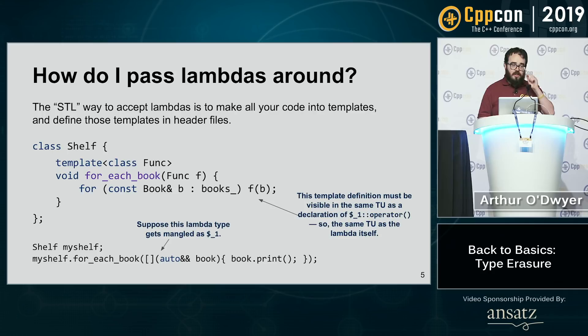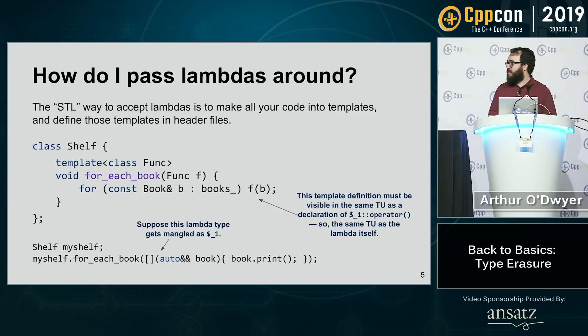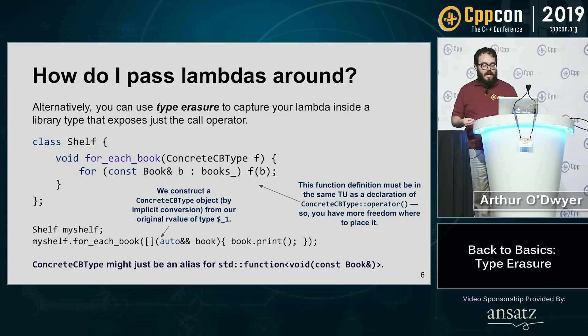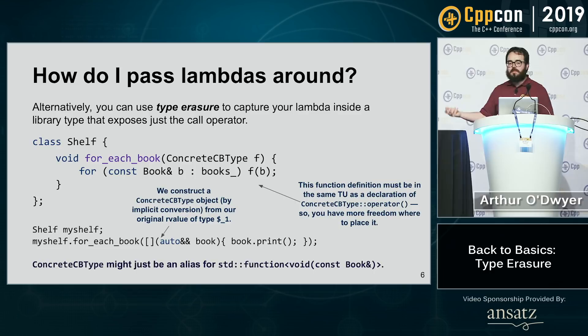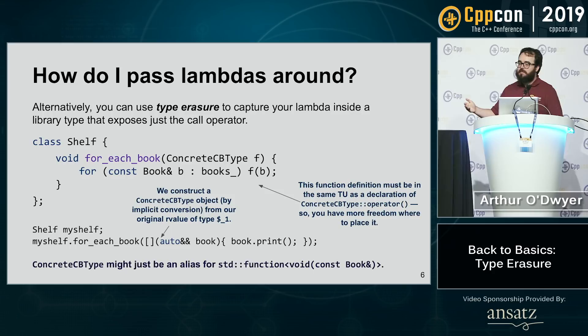This can lead to code bloat — lots of very similar copies of the same function. It also means you have to define the template in a header file. Templates go in header files, and that can increase your compile time, not to mention the time of stamping out all those copies. We're looking for a way to have a concrete callback type — a function that is not a template — so I can move the implementation into a separate CPP file and get the benefits of separate compilation, while still calling it with any kind of lambda.